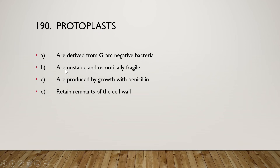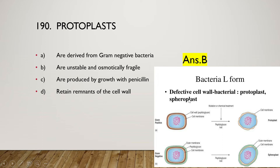The right answer is option B — protoplasts are unstable and osmotically fragile. A protoplast is a cell that lacks a cell wall. If the cell wall of a gram-positive cell is removed, the cell is called a protoplast. If the cell wall of a gram-negative bacteria is removed, it is called a spheroplast. Both of these structures are known as bacterial L-forms.